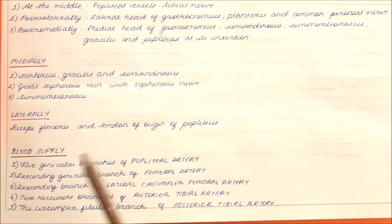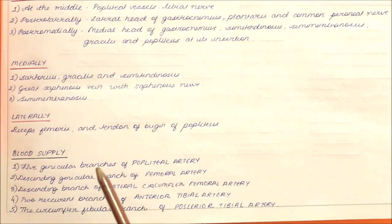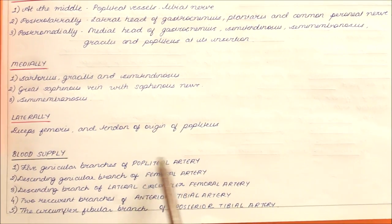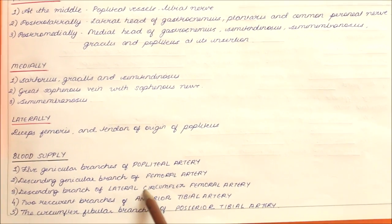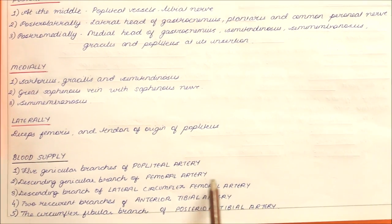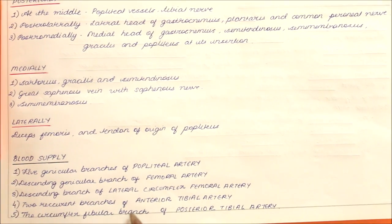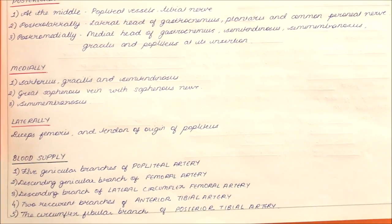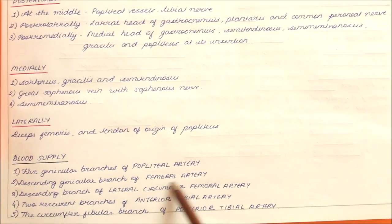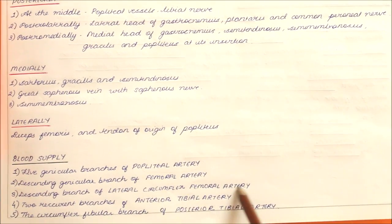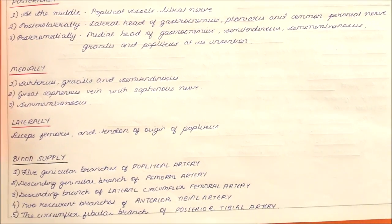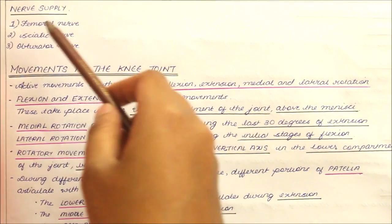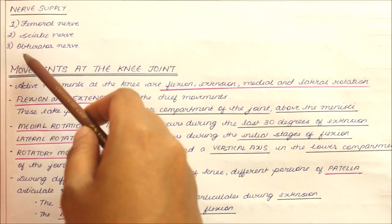The blood supply of the knee joint is provided by the five genicular branches of the popliteal artery, the descending genicular branch of the femoral artery, the descending branch of the lateral circumflex femoral artery, the two recurrent branches of the anterior tibial artery, and the circumflex fibular branch of the posterior tibial artery. The nerve supply of the knee joint is by the femoral, sciatic, and obturator nerves.